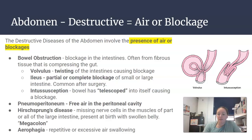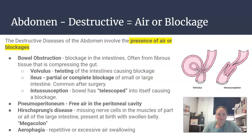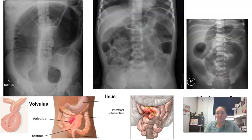Hirschsprung's disease is commonly seen in children — sometimes it's referred to as megacolon, meaning a really big colon, presenting with a swollen belly. Aerophagia is repetitive or excessive air swallowing.